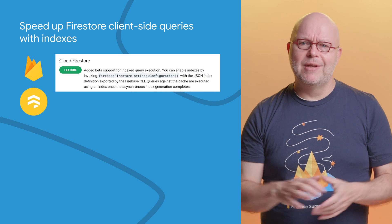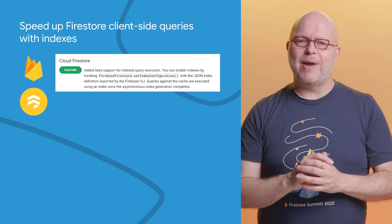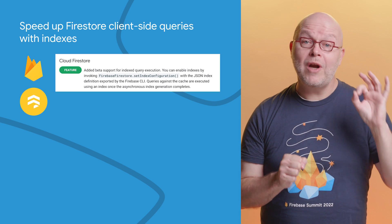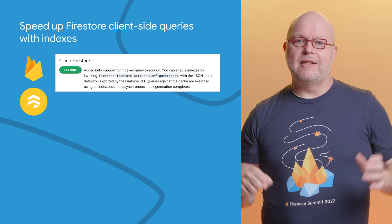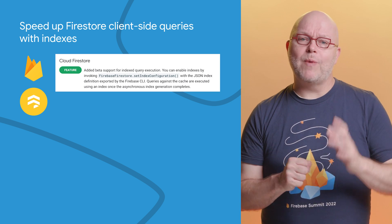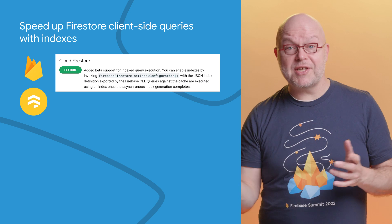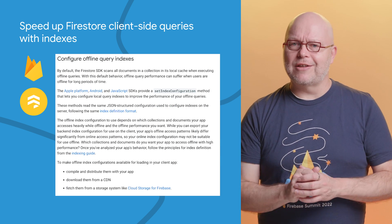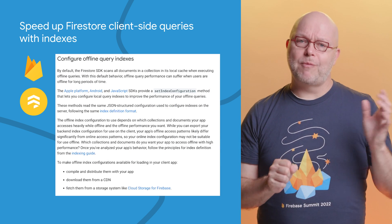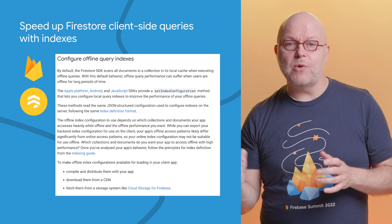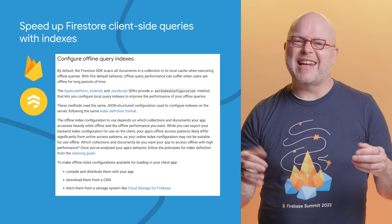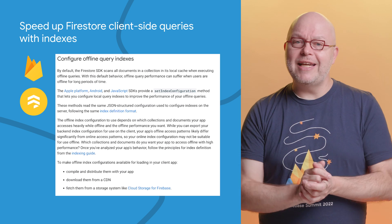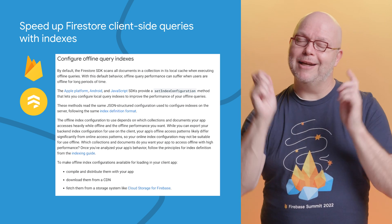Speaking of Firestore, the client-side SDK for our primary platforms now supports index queries on the locally cached data. This speeds up queries while your users are offline, just as server-side indexes do for online queries. To get started, you can export your index definitions from the Firebase CLI and then import those into the SDK when the app starts, so that it has the same indexes on the local cache. Check the link to the documentation included below.